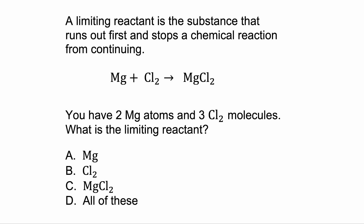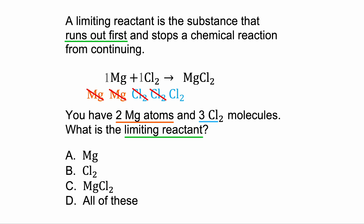Feel free to pause and do this one on your own. We're finding the limiting reactant — which one runs out first? We've got two MGs (two magnesiums) and three Cl2s. We combine one of these with one of these, canceling one for one. After two combinations, we end up with a leftover Cl2. The thing that ran out first was magnesium, so that's the limiting reactant. That shortcut: if there are two of one and three of the other, the smaller number usually tells you which is the limiting one.